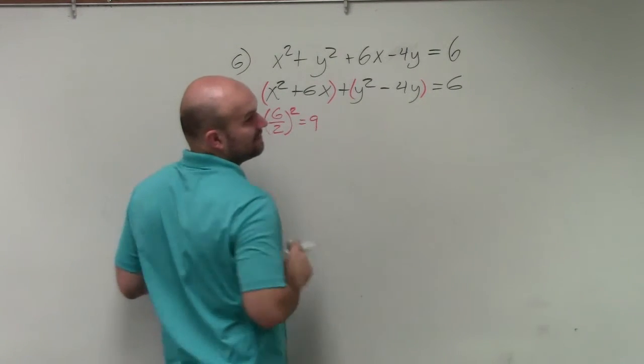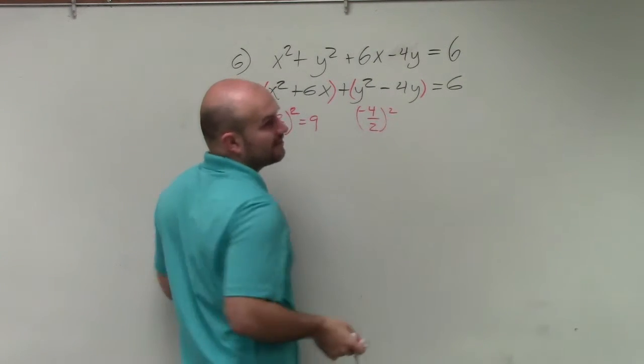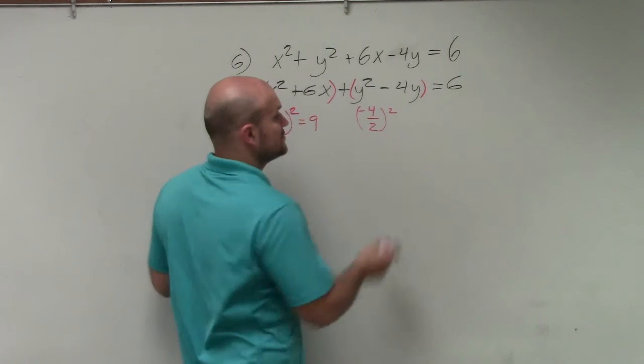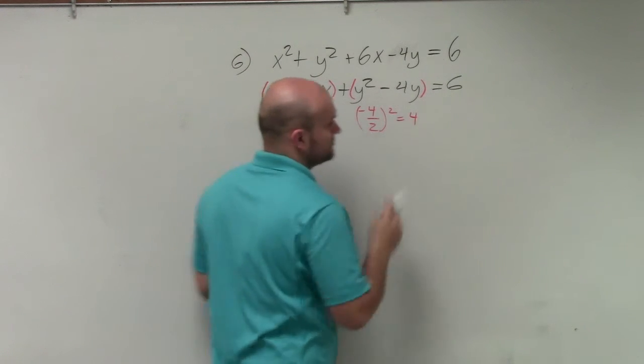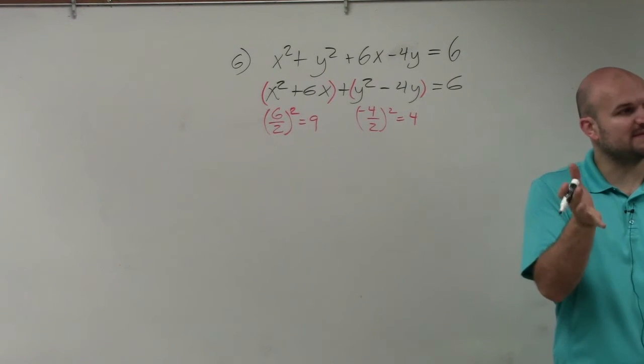Over here, I have negative 4 divided by 2 squared. Negative 4 divided by 2 is negative 2. Negative 2 squared is equal to 4. So remember, now what we're going to want to do is add those values inside of our parentheses to create our perfect square trinomial.